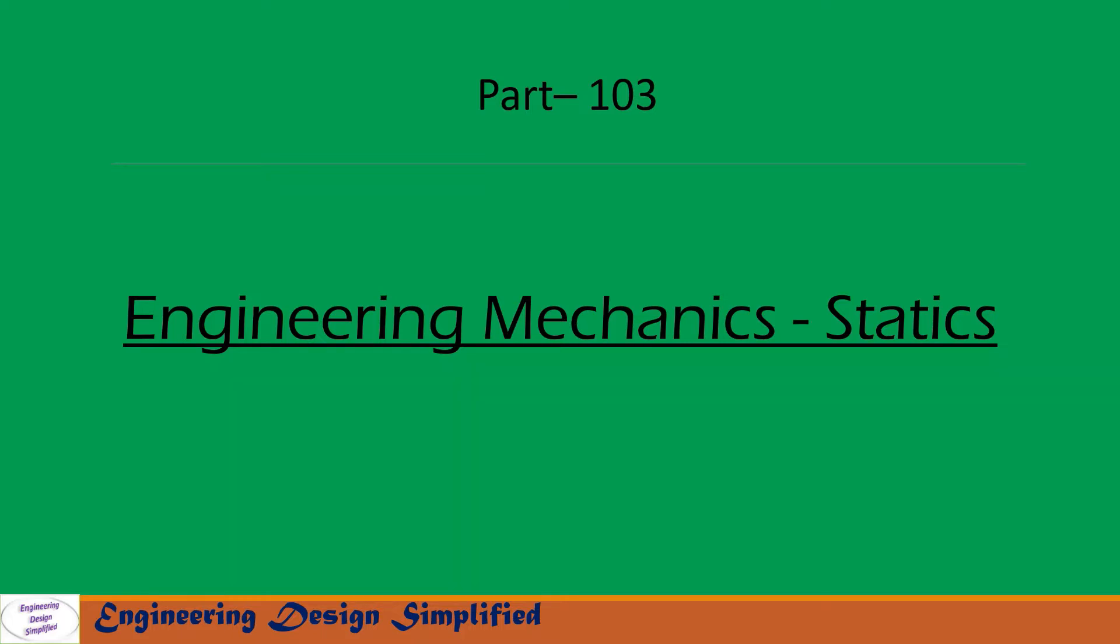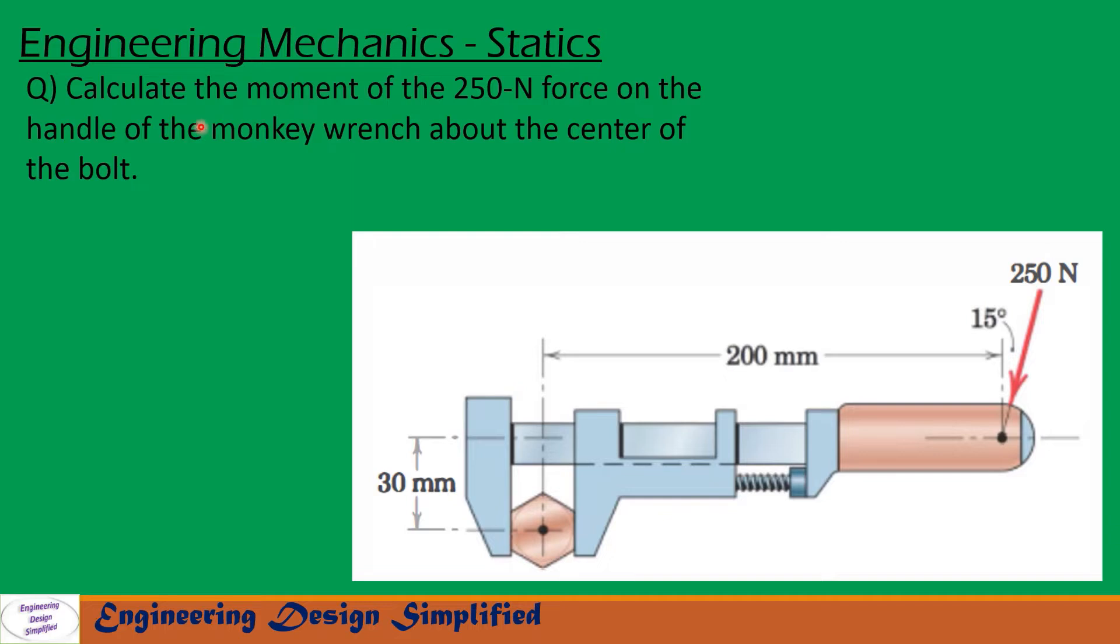Today's problem is: calculate the moment of the 250 Newton force on the handle of the monkey wrench about the center of the bolt. In this problem, we have a monkey wrench with length from the center of the bolt to the load application point of 200 millimeters, with a distance of 30 millimeters here, and a load of 250 Newtons applied at an angle of 15 degrees from the vertical. We need to find the moment about the center of the bolt due to this force.